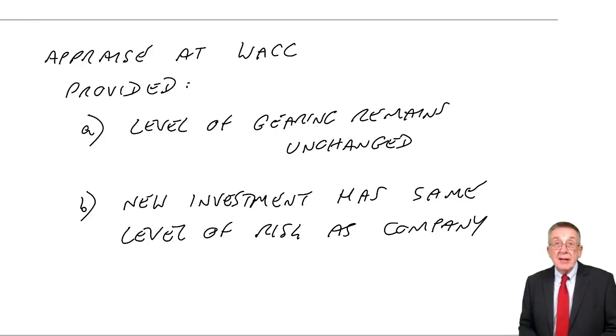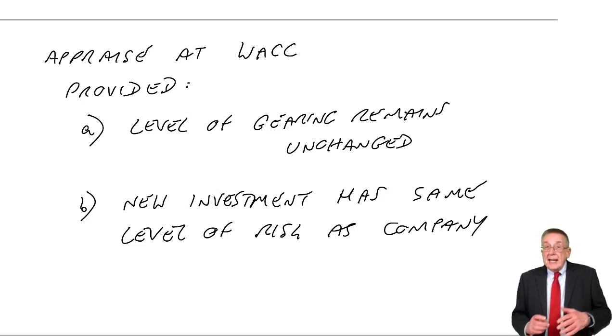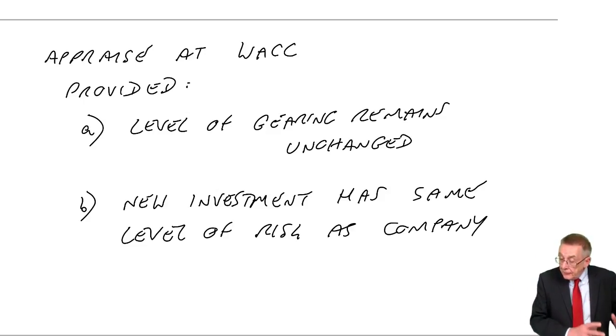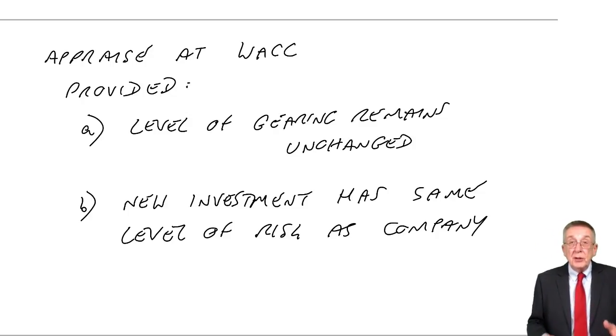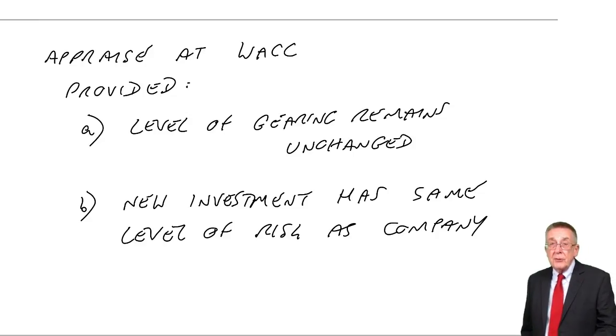Now, it does make the question, what happens if the level of gearing changes? What happens if the investment does have a different risk? Well, in later exams, in paper P4, you're expected to deal with both of those in full with numbers. In paper F9, there's very little by way of calculations, other than what we've done. But there are two theories you're expected to be aware of, and I'll deal with them in the next two chapters.